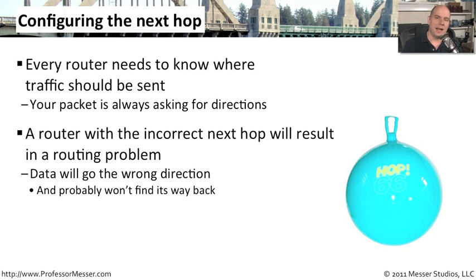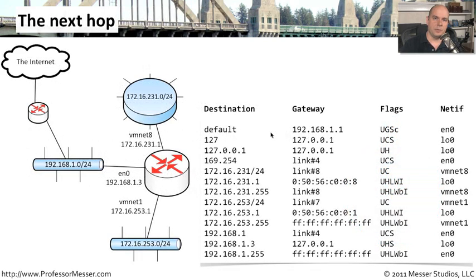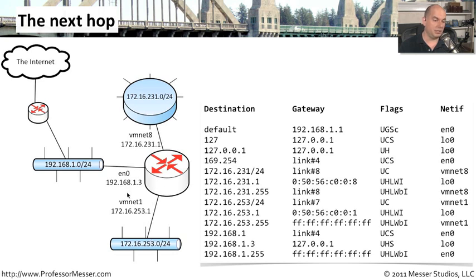One way to understand next hops and how a router works is to look at a routing table. Let's look at a topology of a network and understand how that relates to routing tables. This is the network topology inside my network, and I've grabbed part of the routing table from my computer. There are three networks connected to this router: EN0 for the ethernet connection on the 192.168.1.0 network, VMNet8 on the 172.16.231.0 network, and VMNet1 on the 172.16.253.0 network, with IP addresses associated with those connections going into the router.